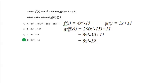They're saying take f of x and place it inside g of x. Since g of x is 2x plus 11, wherever I see an x I plug in what f of x equals. So instead of 2x, it becomes 2 times (4x to the 4th minus 15), plus 11. Distributing the 2 gives 8x to the 4th minus 30, plus 11. Negative 30 plus 11 is negative 19, so the answer is 8x to the 4th minus 19 — answer choice D.